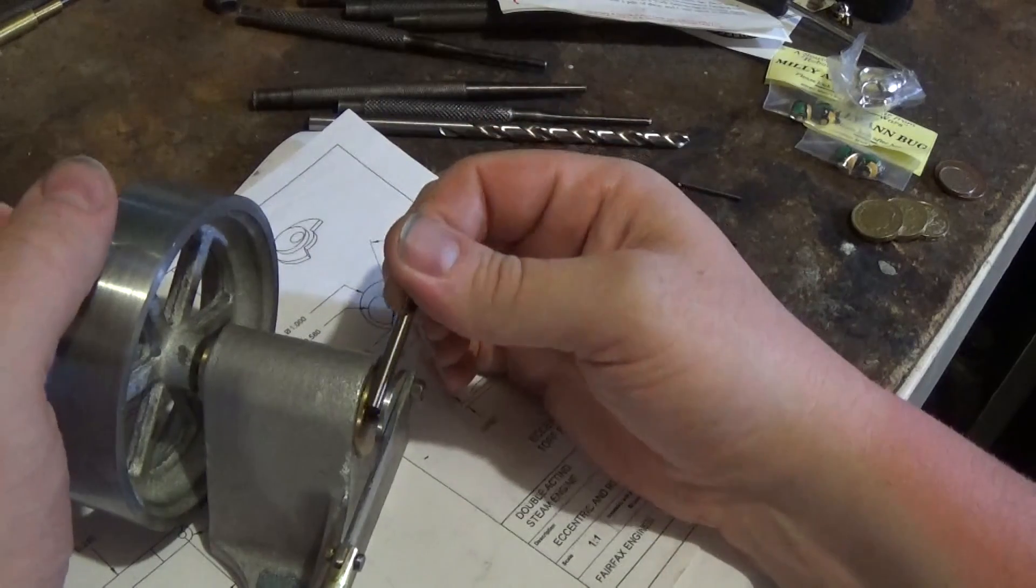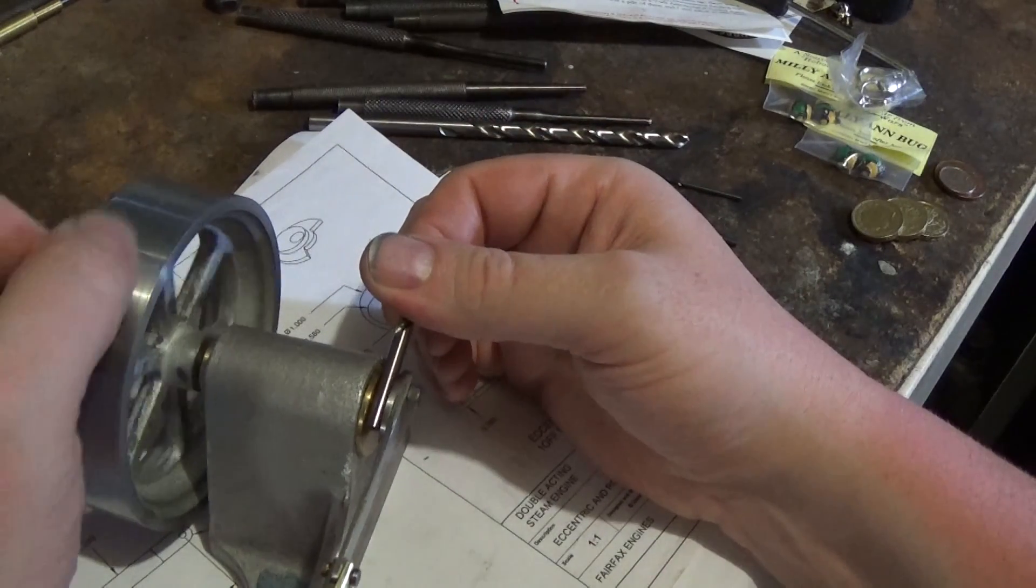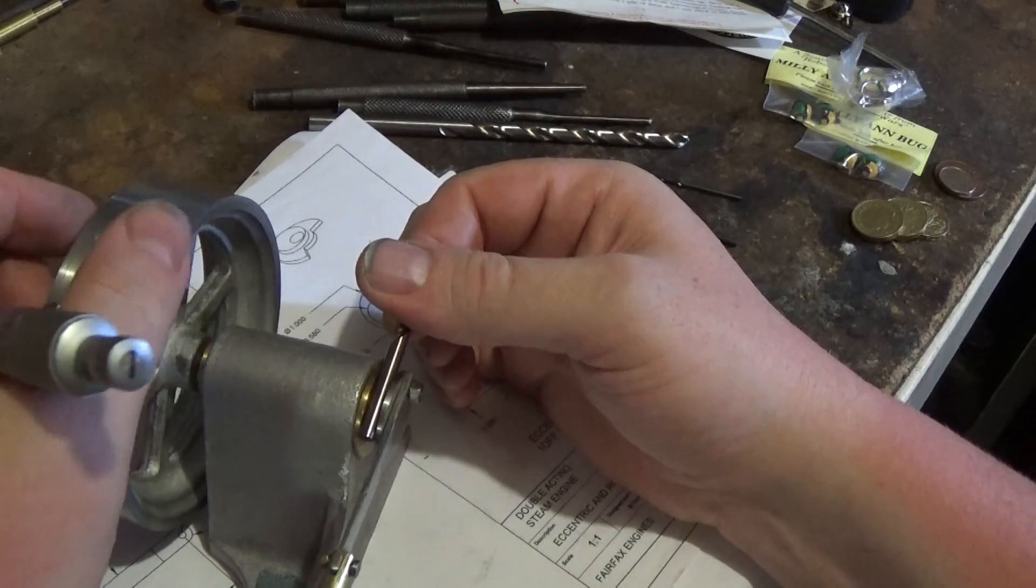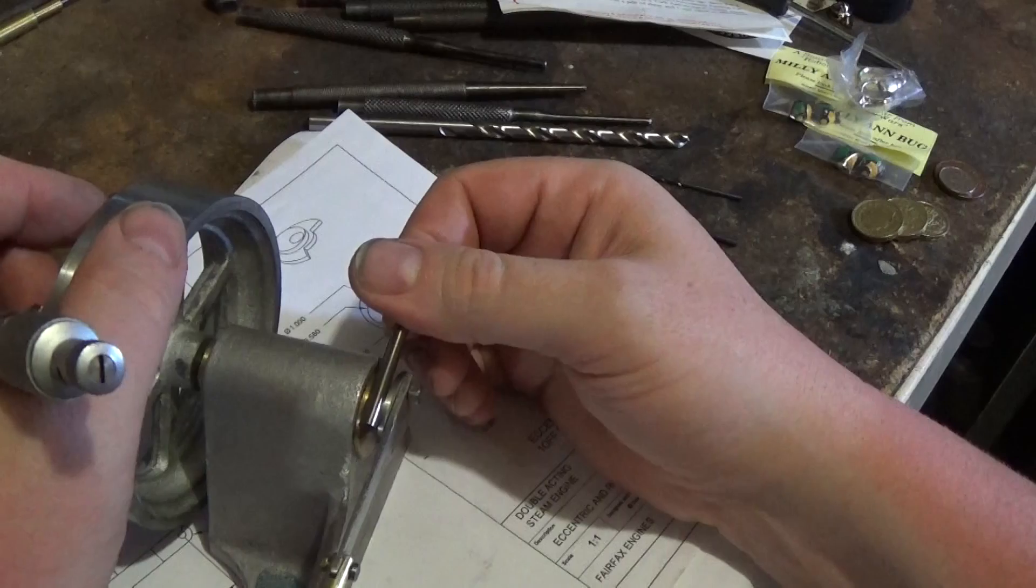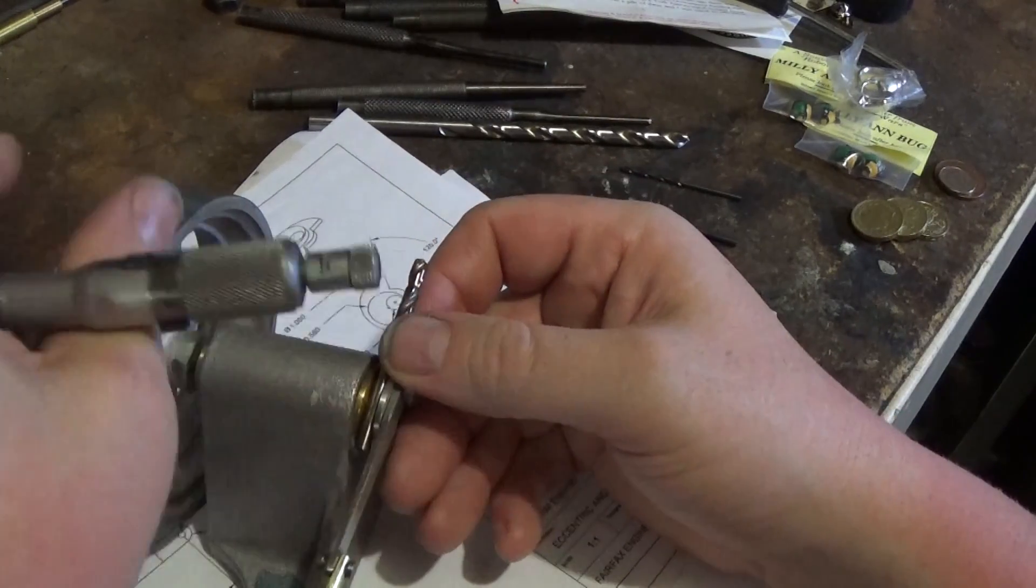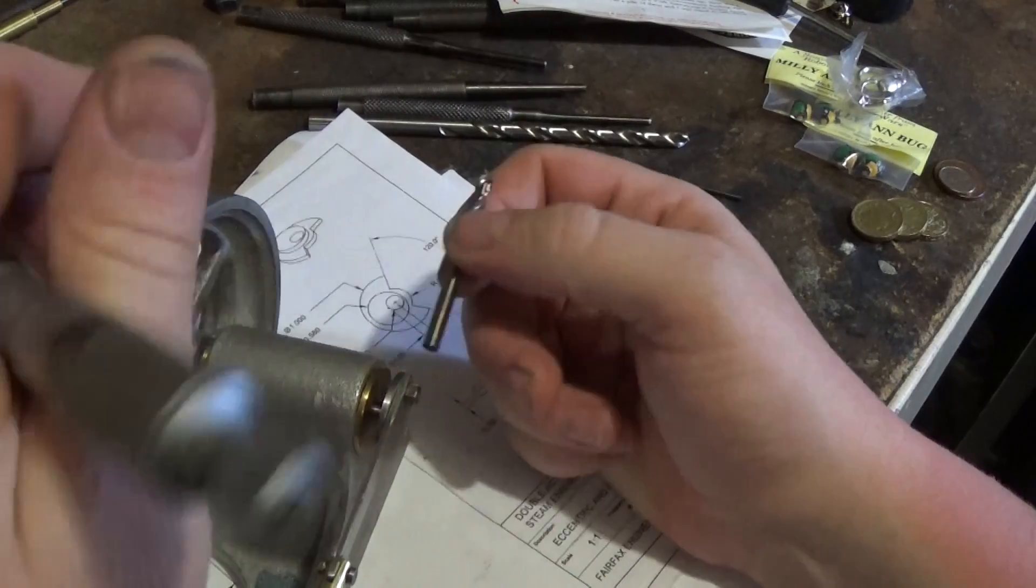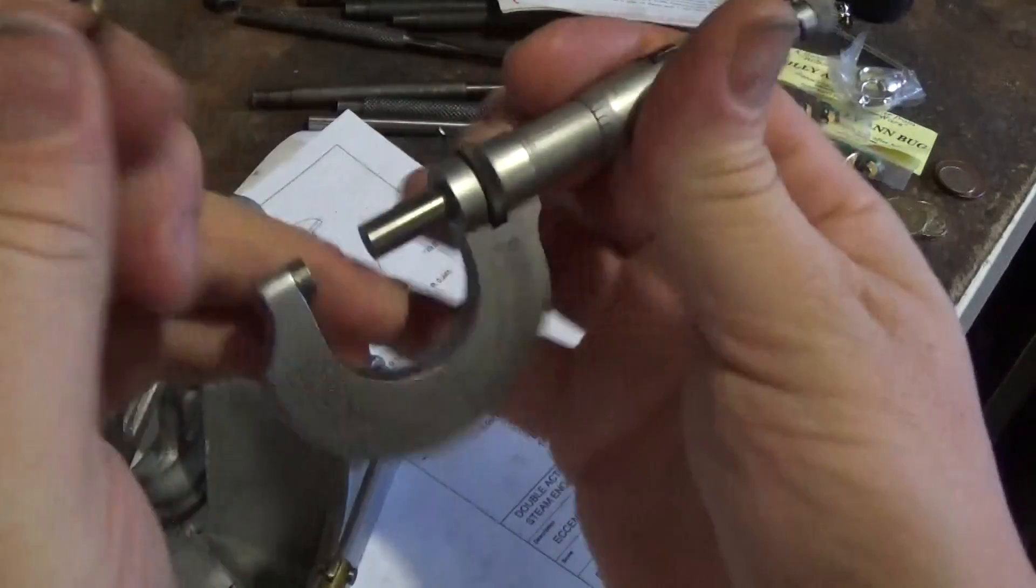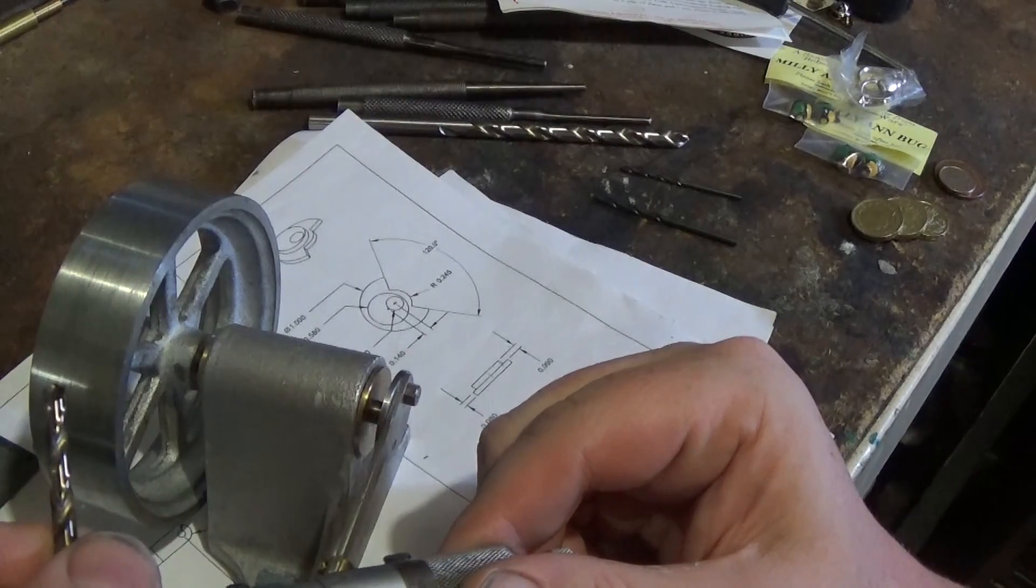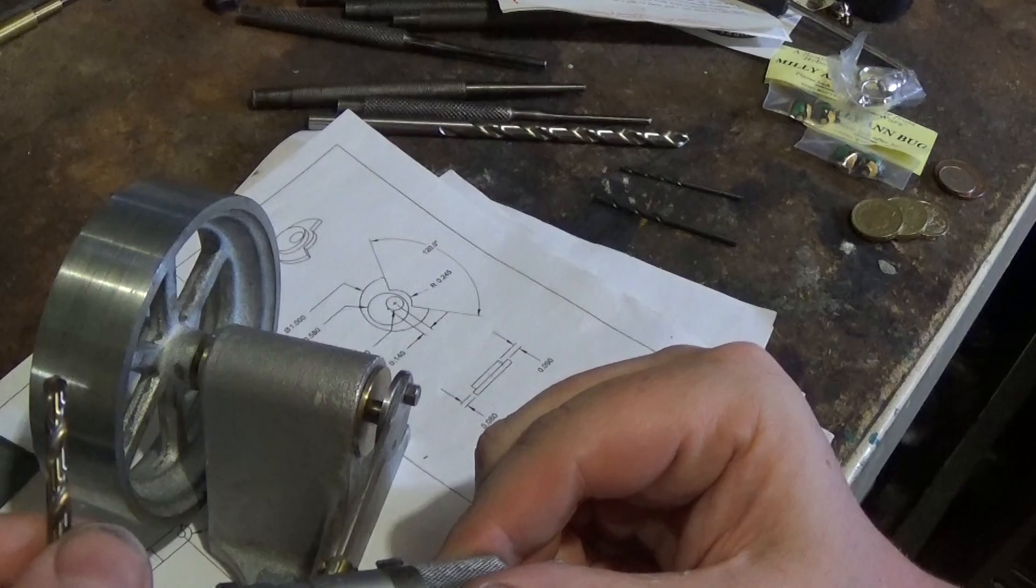What I've done is just found a drill that seems to fit there nicely and give us the least amount of tight spots, and that's how thick we're going to make the overall eccentric.